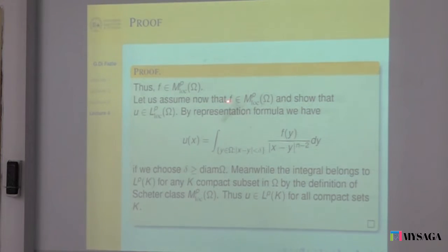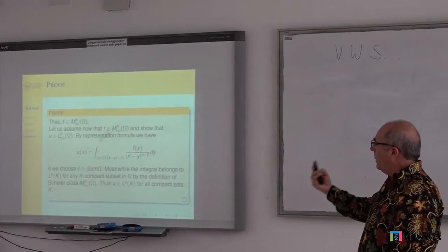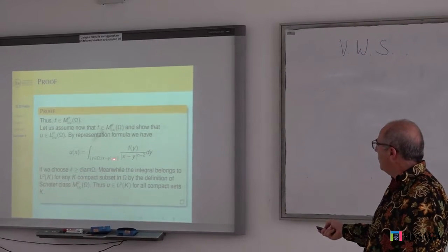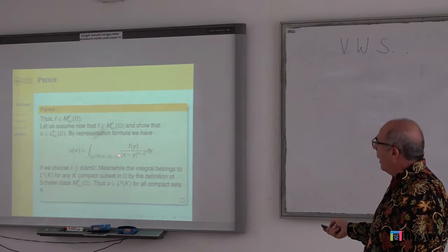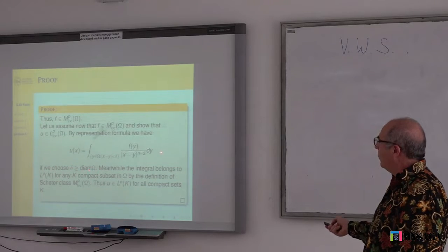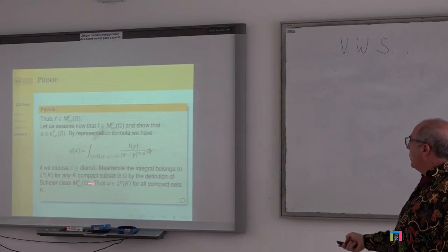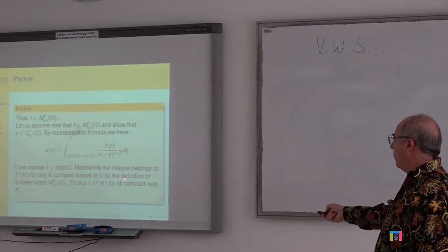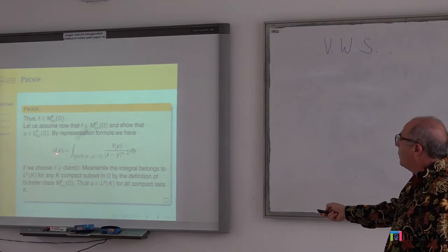Now let's go in the other direction. Assume that F is in this Schechter space, and show that the solution has the given degree of Lp integrability. Once again, we use the representation formula. We split the integral choosing delta appropriately, so the other integral disappears because F is zero there. We can assume our representation formula is in this form, and the integral belongs to Mp. This means U belongs to Mp, so the proof is very easy — much easier than we expected.